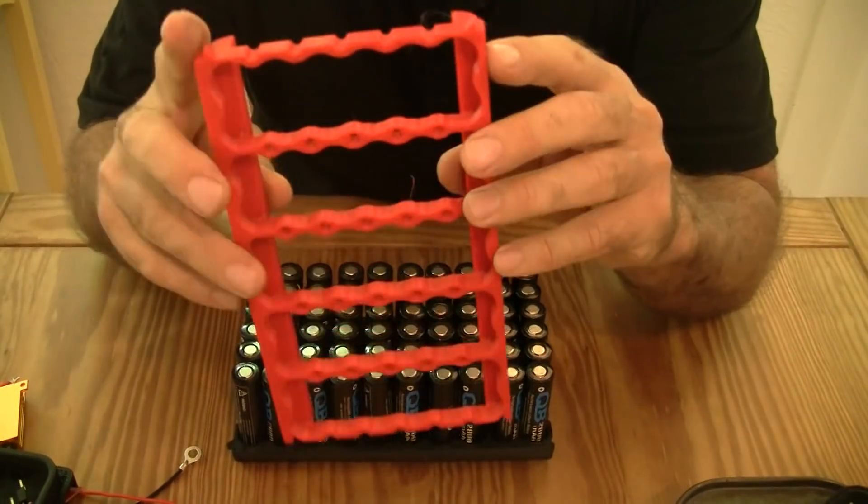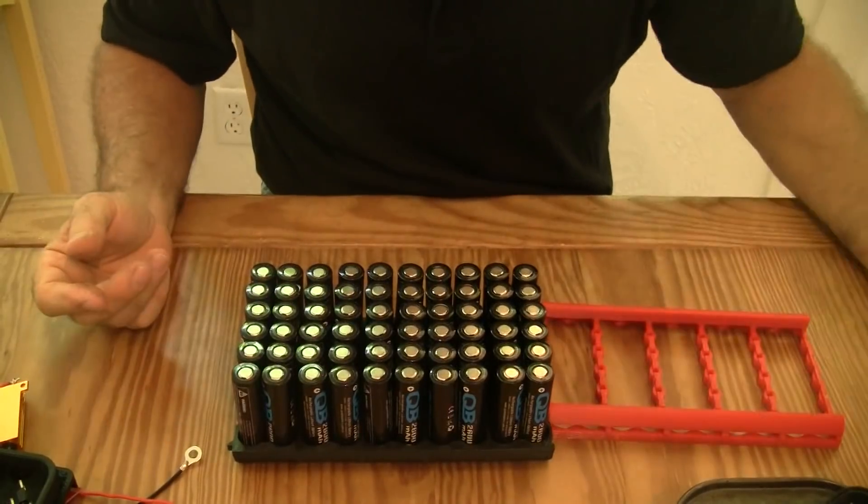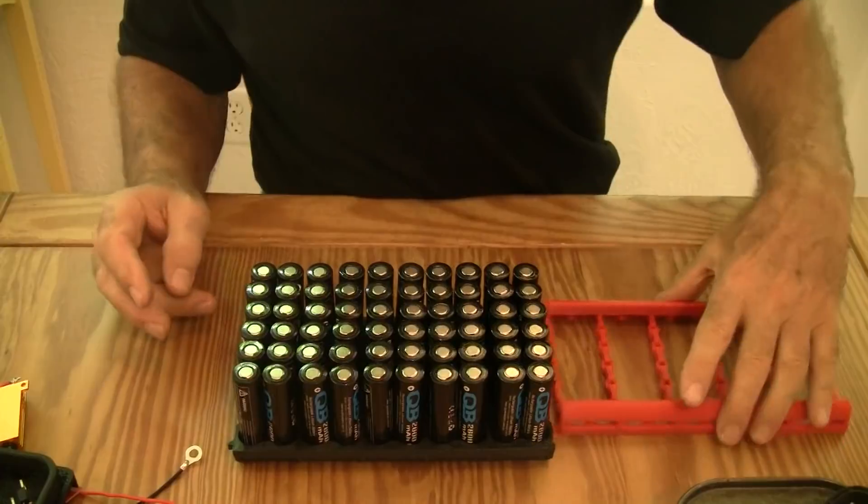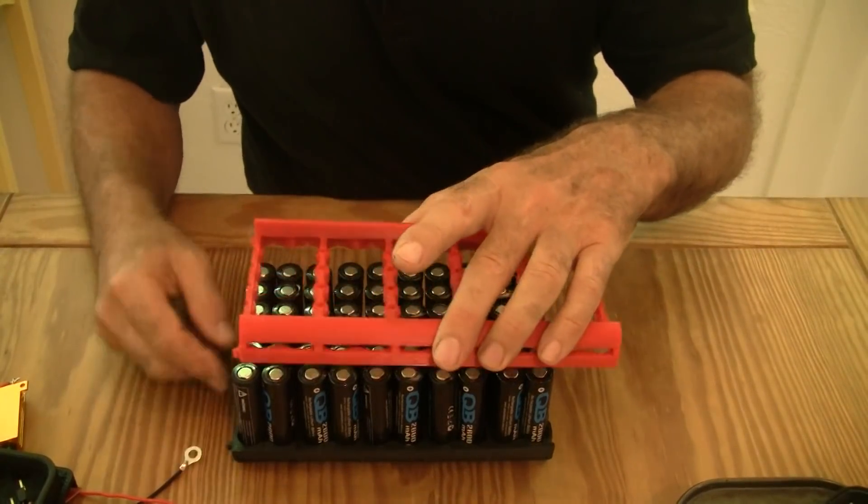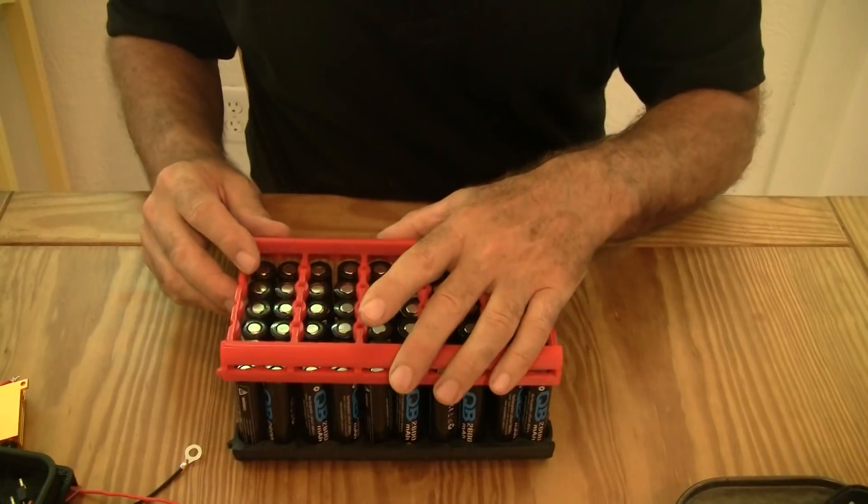These battery blocks have got little spikes right here, notches. That's so they can plug in to the next block if you decide to use a couple of these in series or parallel. So be sure that, just for good form, be sure that the notches line up. Now let's try getting this guy on here.